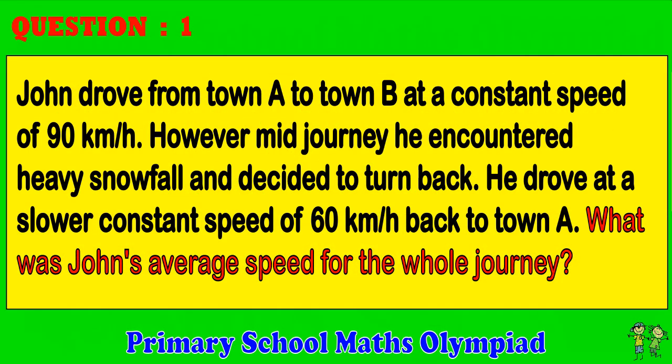Question 1. John drove from Town A to Town B at a constant speed of 90 km per hour. However, mid-journey he encountered heavy snowfall and decided to turn back. He drove at a slow constant speed of 60 km per hour back to Town A. What was John's average speed for the whole journey?